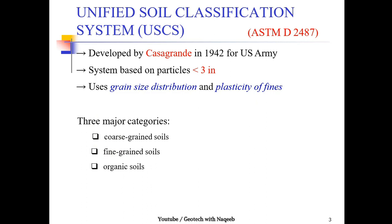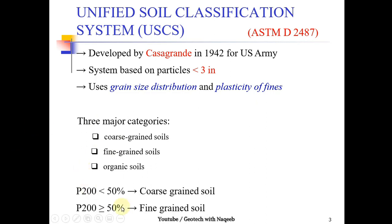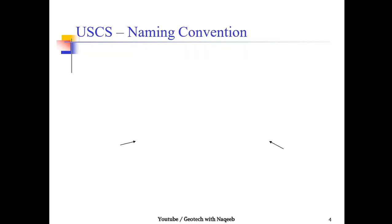The next category is organic soil — soil which contains some organic content. This can be assessed by chemical analysis. So to recap: if percentage passing sieve number 200 is less than 50 percent, the soil is coarse grain; if it is greater than 50 percent, the soil is fine grain.